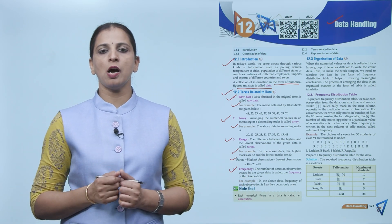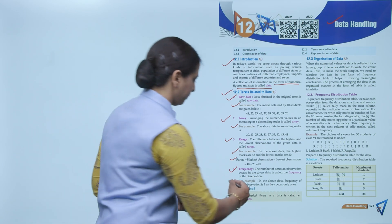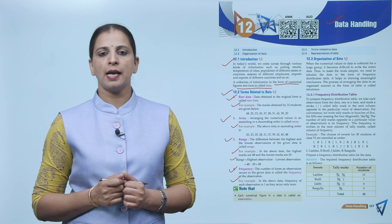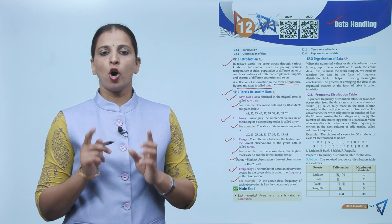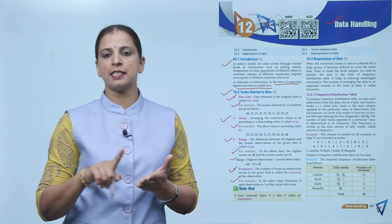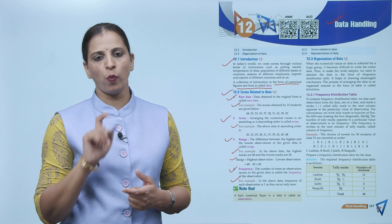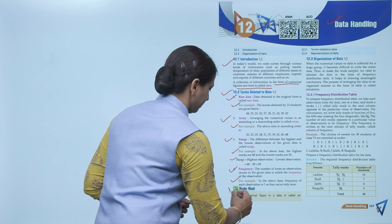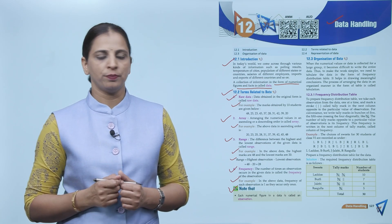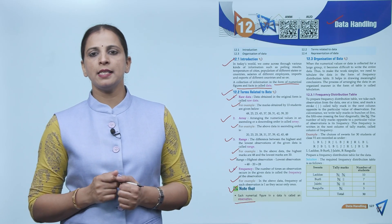Next is frequency. The number of times an observation occurs in the given data is called the frequency of that observation. In the above data, the frequency of each observation is one, as each value occurs only once. Each numerical figure in the data is called an observation.